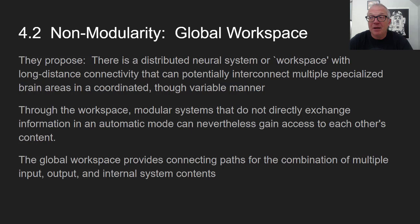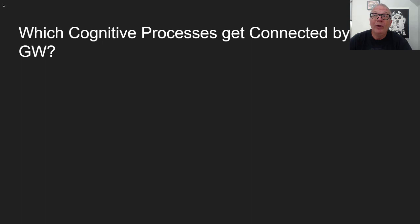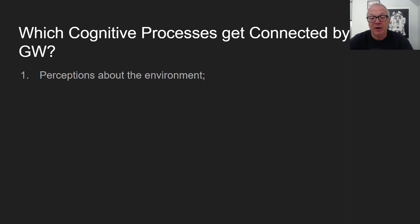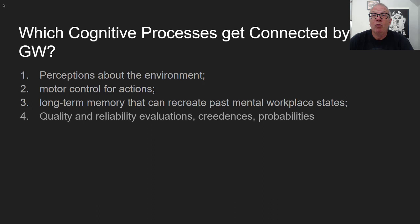Through the workspace, modular systems that don't directly exchange information in automatic mode can nevertheless gain access to each other's content. This super-highway of neurons connects up different low-level systems so they can share reports. The global workspace provides connecting paths for the combination of multiple input, output, and internal system contents, drawing on both brain physiology and fMRI studies of activation patterns.